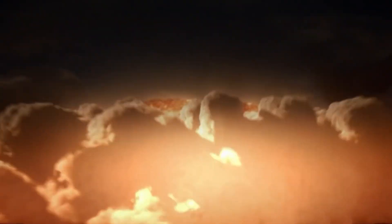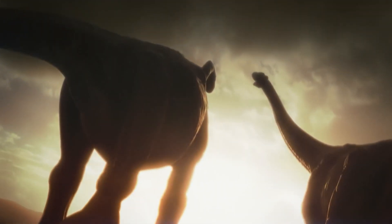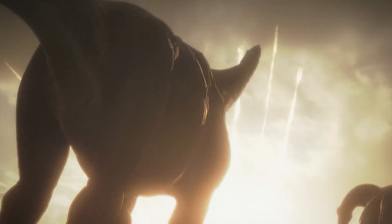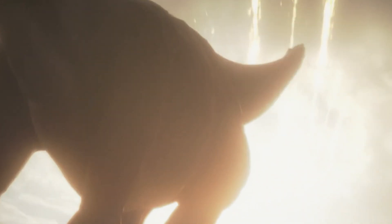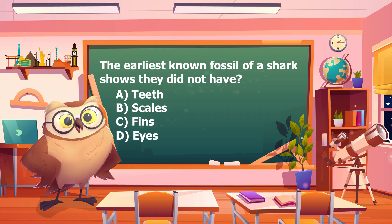The Devonian period ended with another extinction event, killing off roughly 75% of the species on Earth. Before we talk about the period that succeeded it, let's take a pop quiz. The earliest known fossil of a shark shows they did not have: teeth, scales, fins, or eyes? Do you think you know the answer? Leave your response in the comments below.